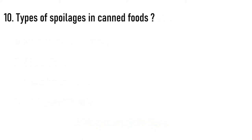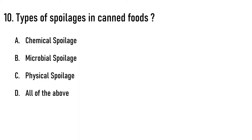Types of spoilages in canned foods — options are A) chemical spoilage, B) microbial spoilage, C) physical spoilage, D) all of the above. The correct answer is option D, all of the above. These are the three types of spoilages in canned foods.